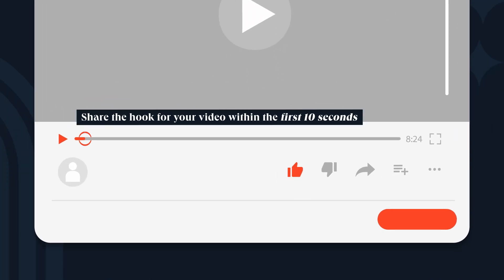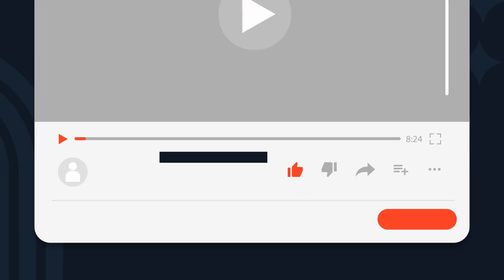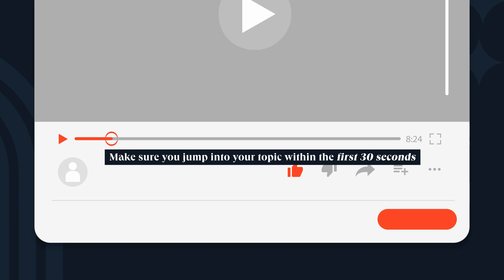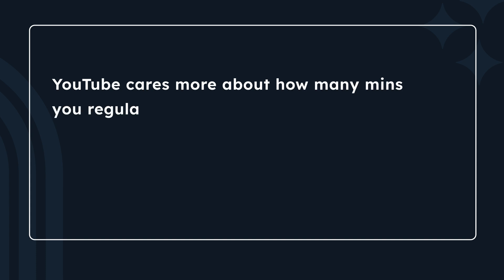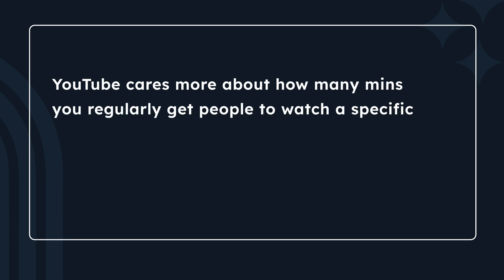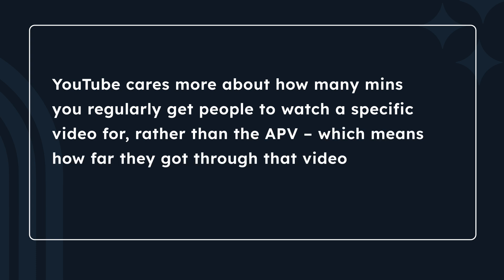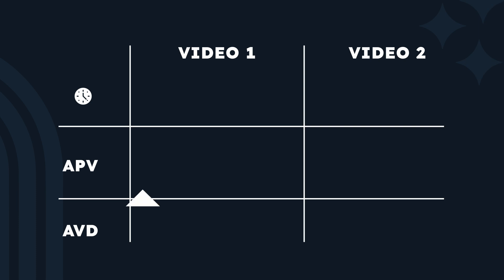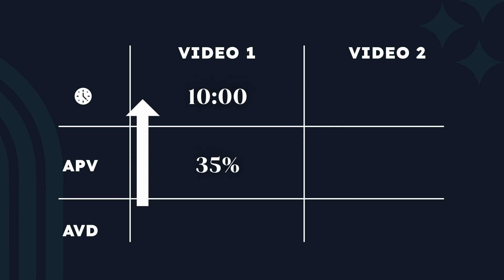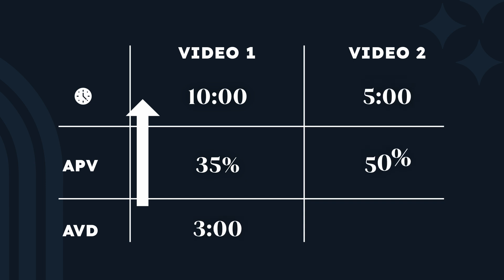If you're losing viewers in the first 30 seconds, make sure you follow these best practices: share the hook for your video within the first 10 seconds, and jump right into the topic within the first 30 seconds. Remember, YouTube cares more about how many minutes you regularly get people to watch — the AVD — rather than the APV, which is how far they got through the video as a percentage. For example, YouTube will prioritize a 10-minute video with a 35% APV and an AVD of 3 minutes over a 5-minute video with an APV of 50% but an AVD of just 2 minutes.